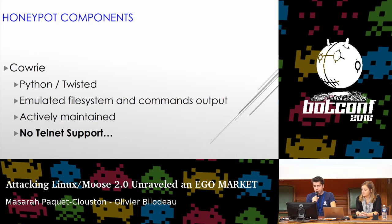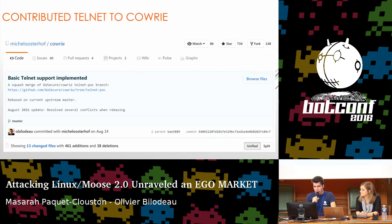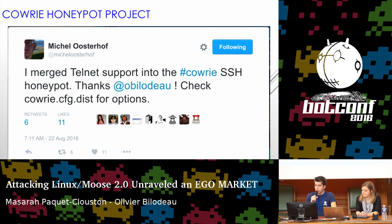We chose Cowrie because it's written in Python and easy to modify. It's easy to emulate the file system — you can binwalk router firmware, extract the file system, and Cowrie has a tool to emulate the whole filesystem in one command. Command output is actively maintained. The only problem was there was no telnet support. But since we're programmers, we figured we could do it. So we contributed telnet support to the Cowrie honeypot project. At first we were afraid he wouldn't merge it, but in August he merged it upstream. We're proud to say GoSecure implemented telnet support in Cowrie — it's now a really valuable honeypot for studying IoT or DDoS botnets.